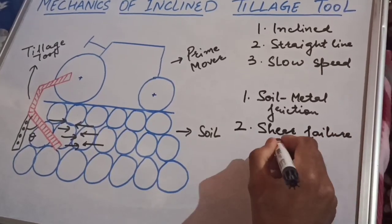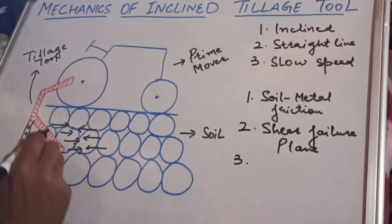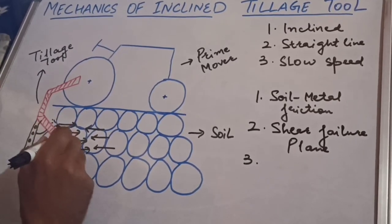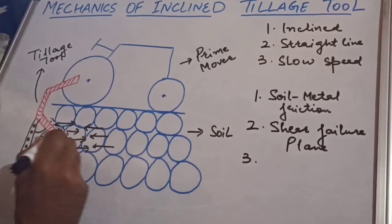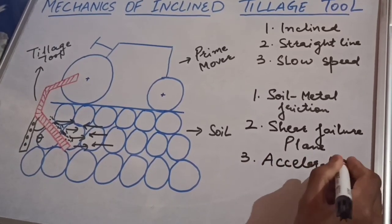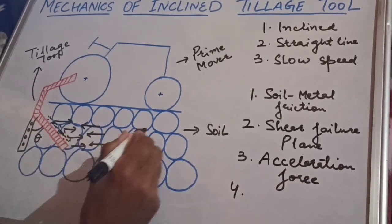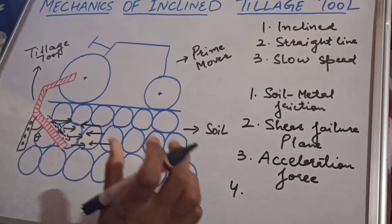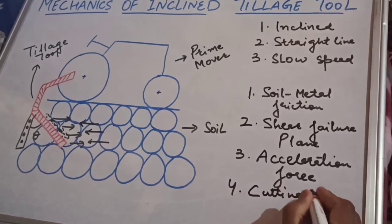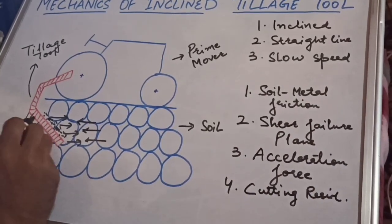That shear failure plane is responsible for the crushing of the soil. When the soil interacts with the tillage tool, it gets accumulated on the working surface of the tool, and there will be some acceleration force as well. Additionally, when this tillage tool moves forward, the soil particles exert a certain resistance, which is called cutting resistance. So these four parameters govern the movement of the tillage tool through the soil.